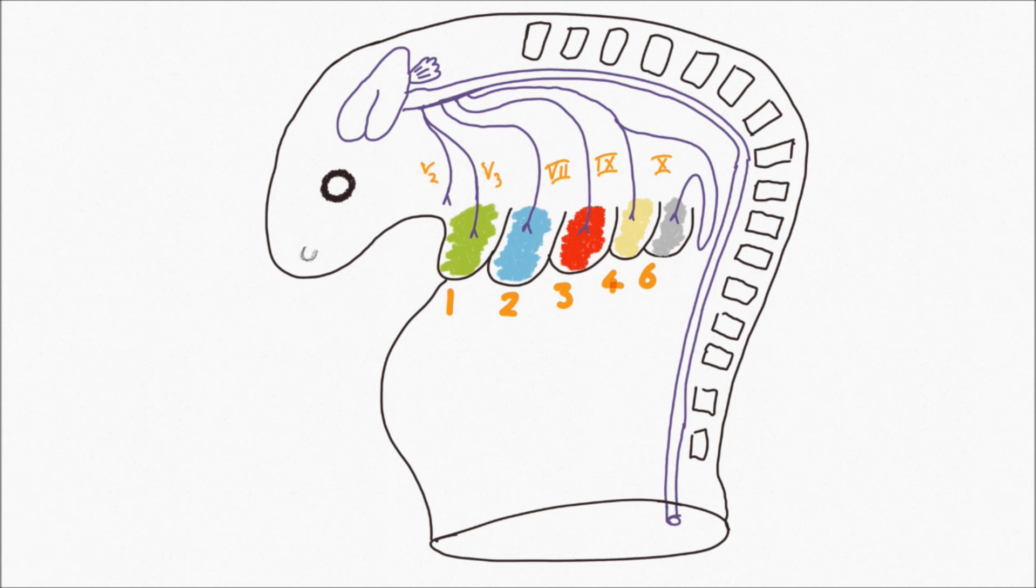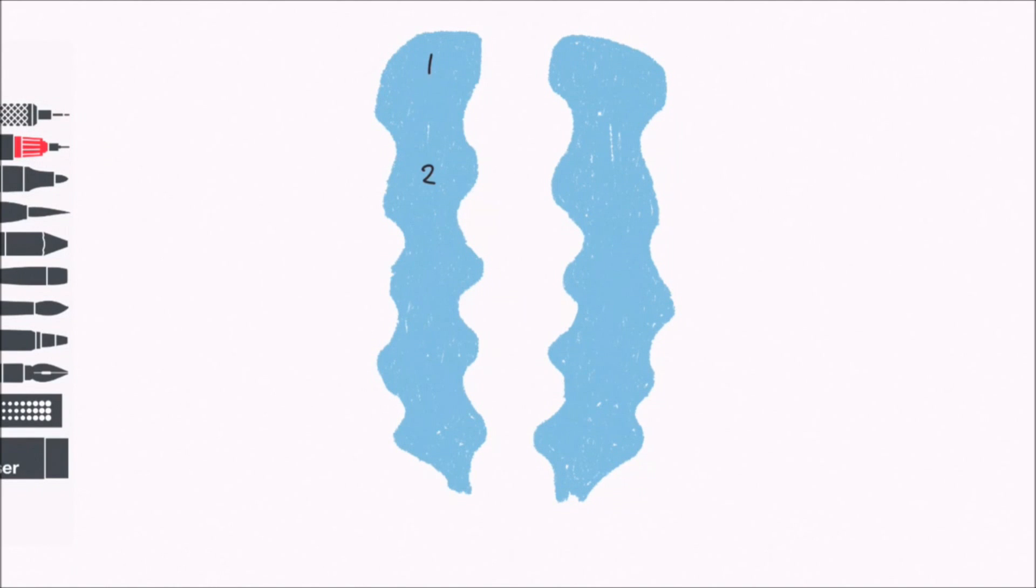Let's go back to the coronal plane and discuss the fate of the pharyngeal arches. There are five arches, four pouches internally, and four clefts externally. Each pouch gives rise to an adult structure.